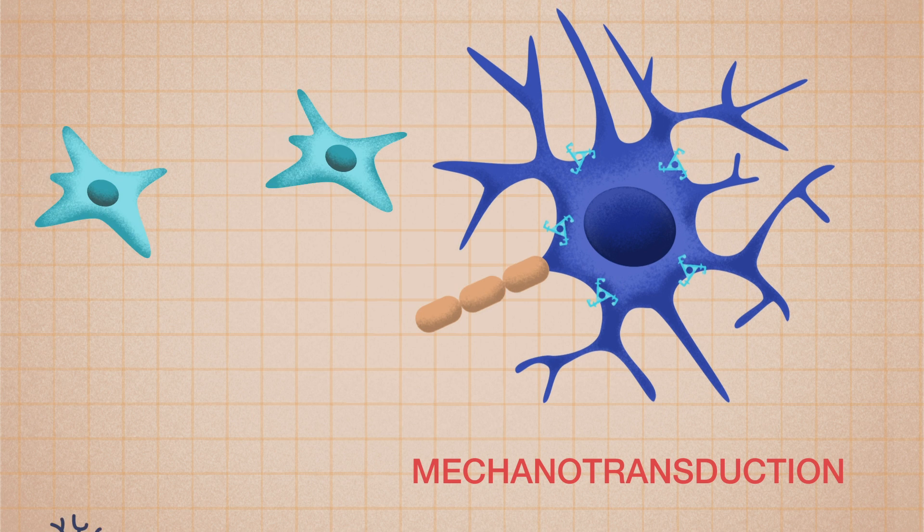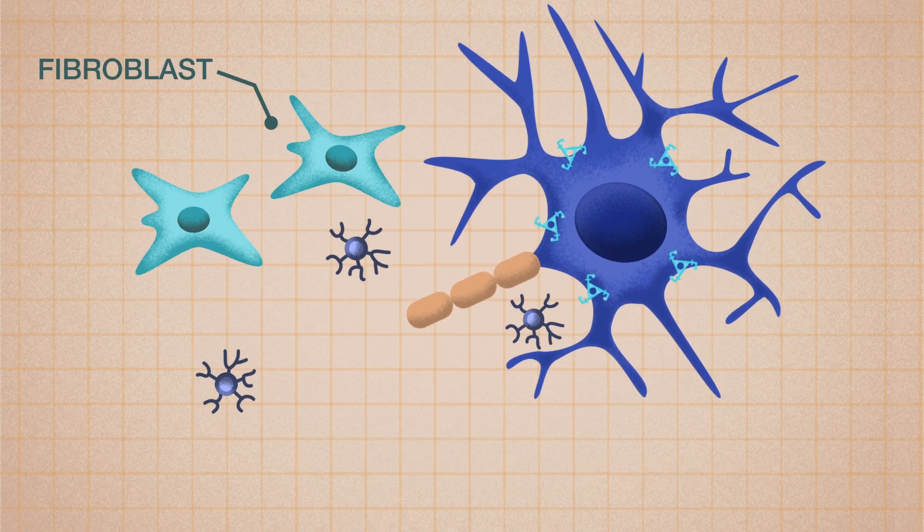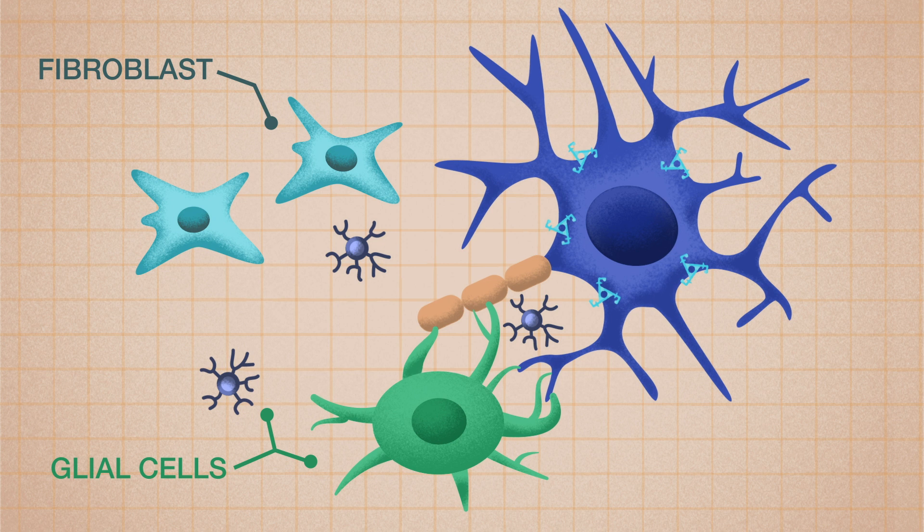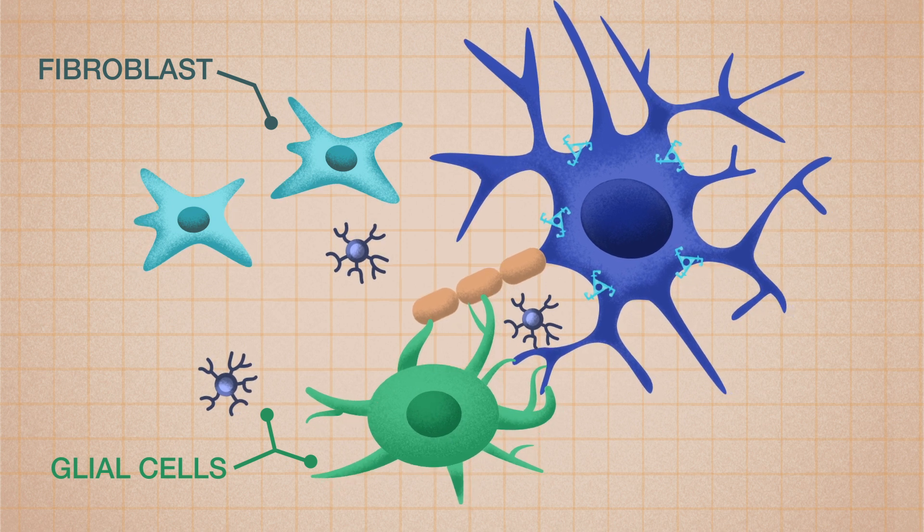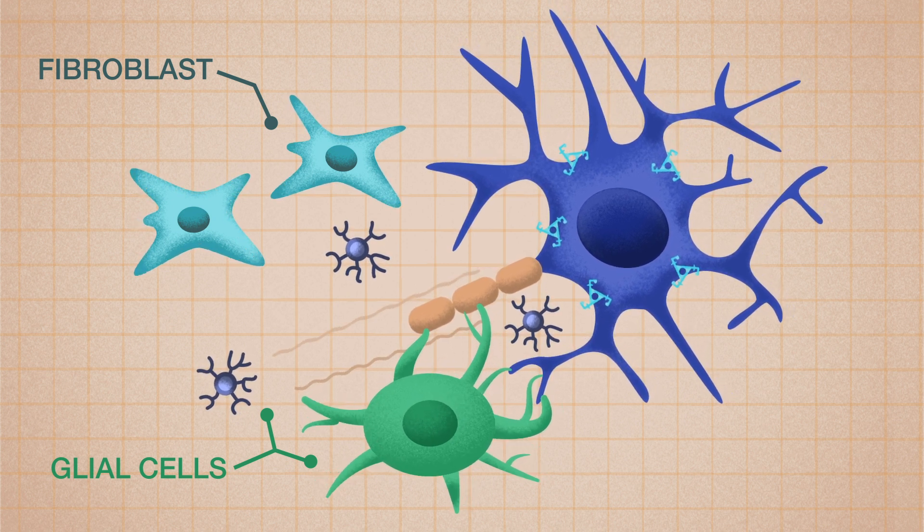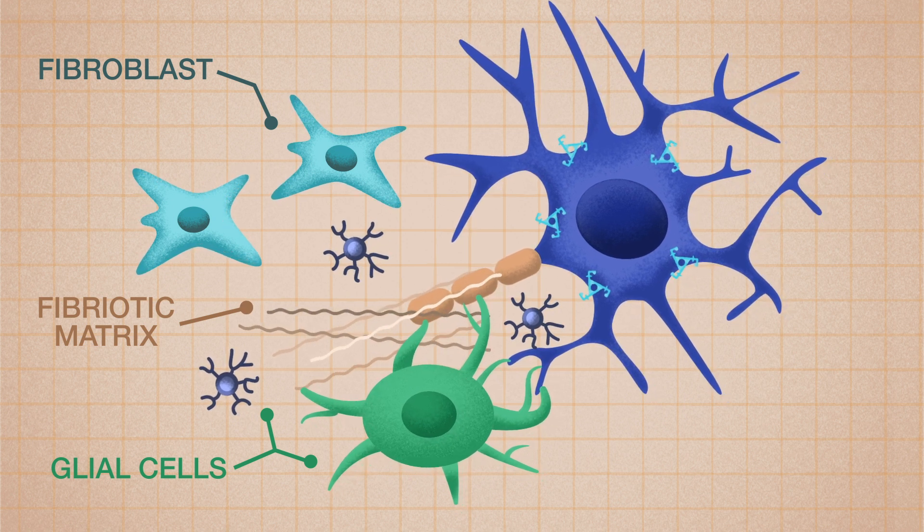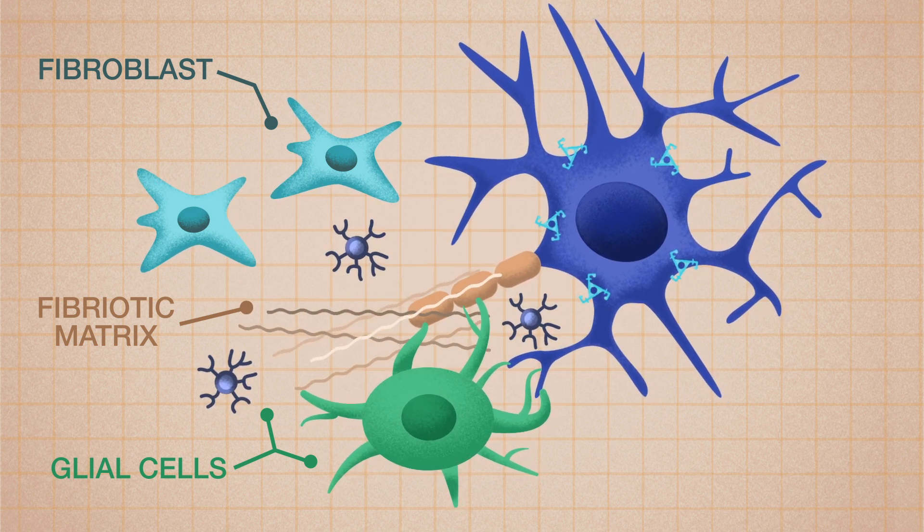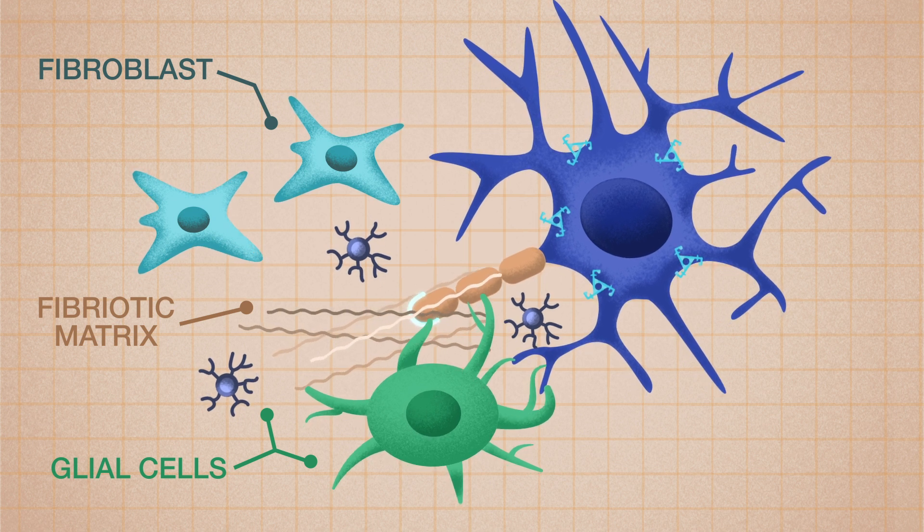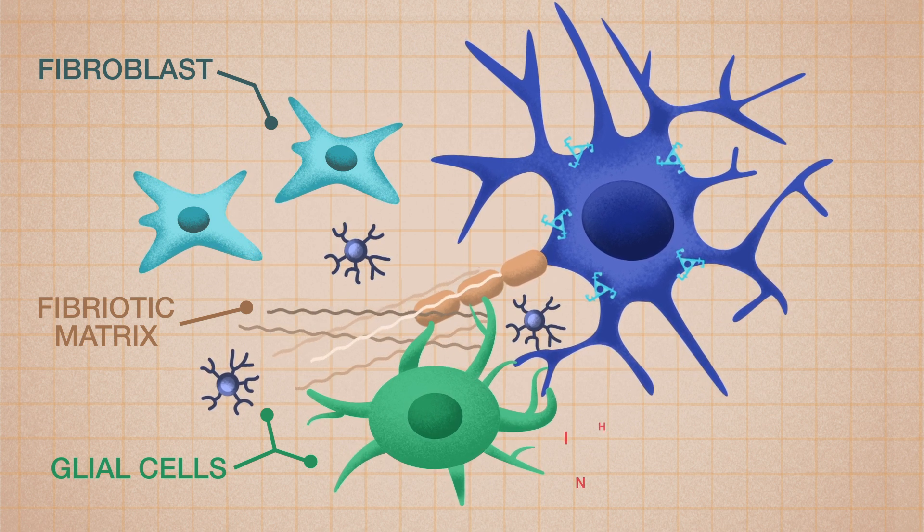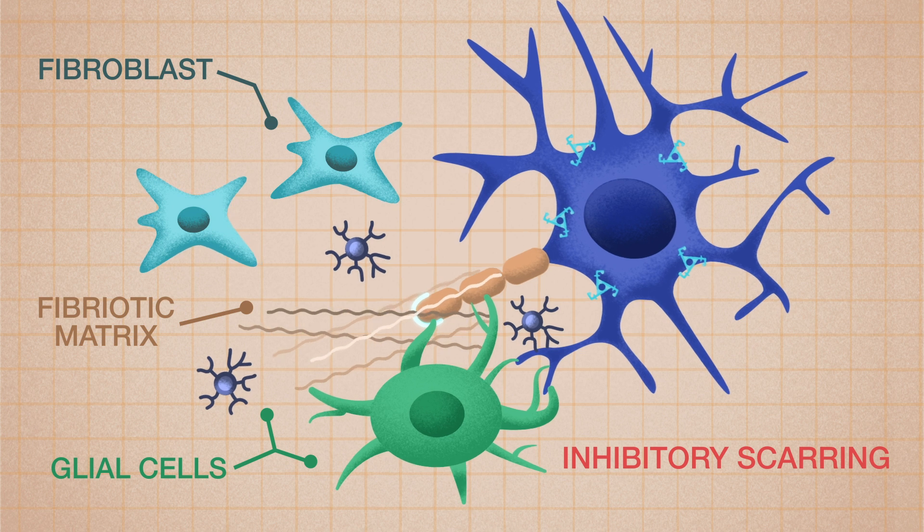On top of that, fibroblasts and glial cells rapidly migrate into the injured area attracted by inflammation mediators and form a fibroglial scar tissue. By doing so, they act like a mechanical and biological barrier that further prevents the growth of injured axons. This is called inhibitory scarring.